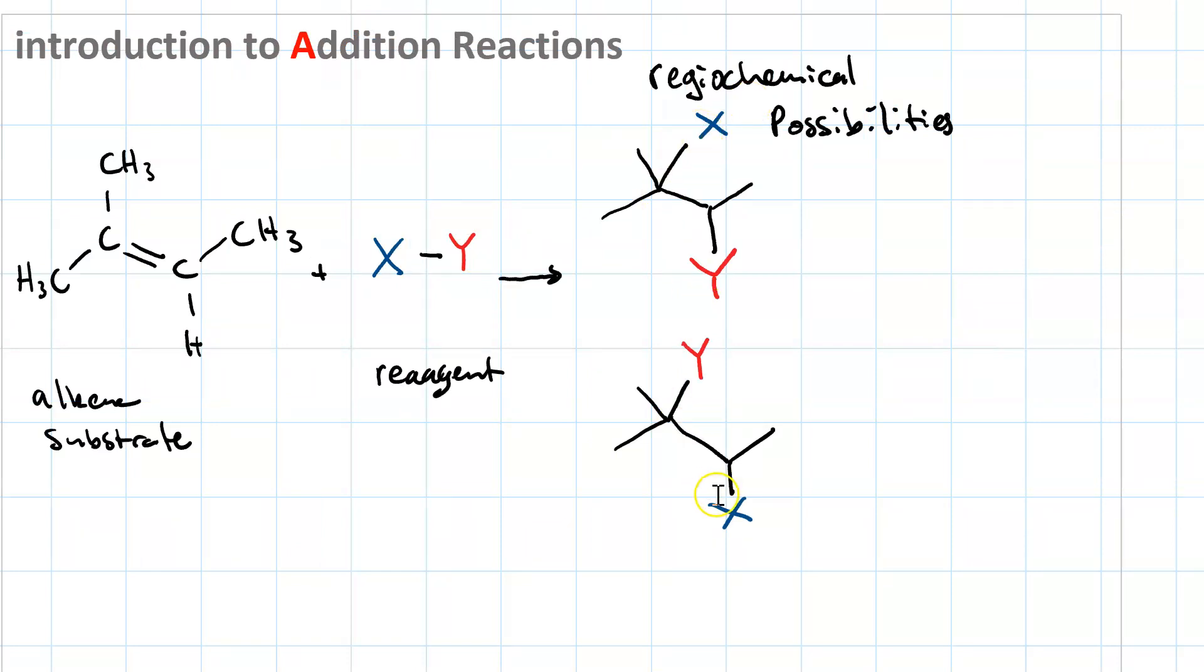So let's say both of these added to the same side, then I can make both of the bonds between the formerly sp2 carbon and the components of the reagent on a wedge. That's called syn, that's one stereochemical possibility.